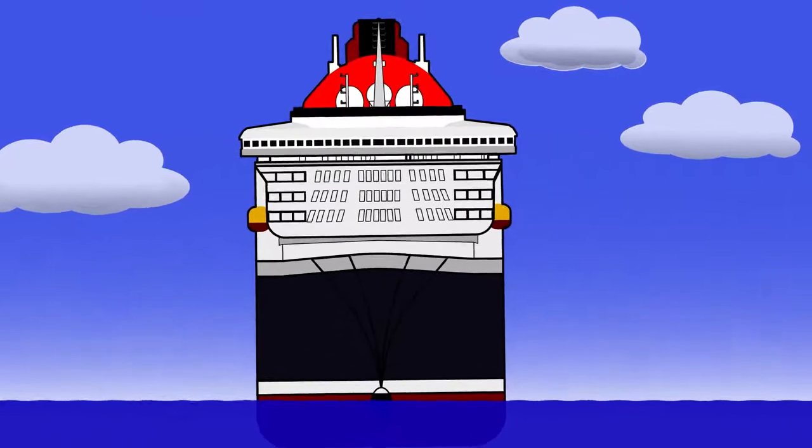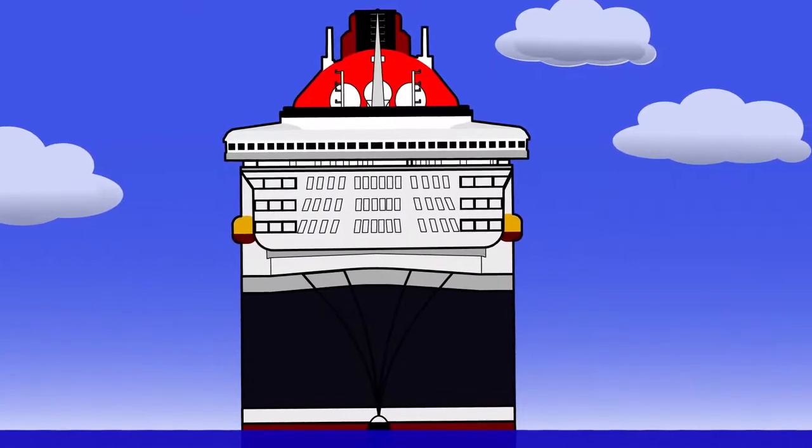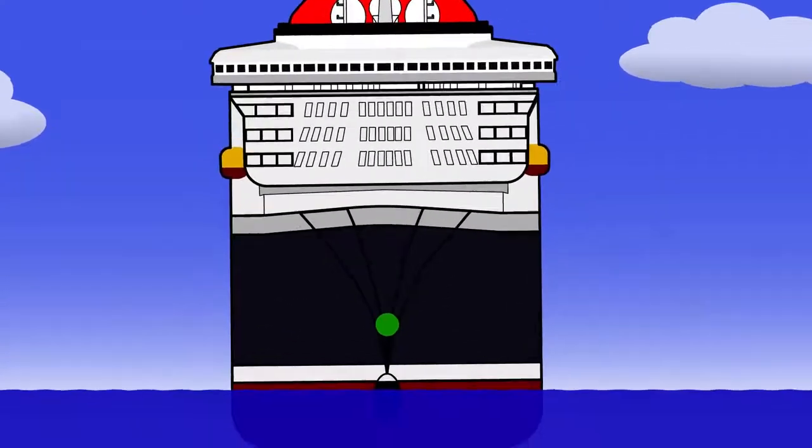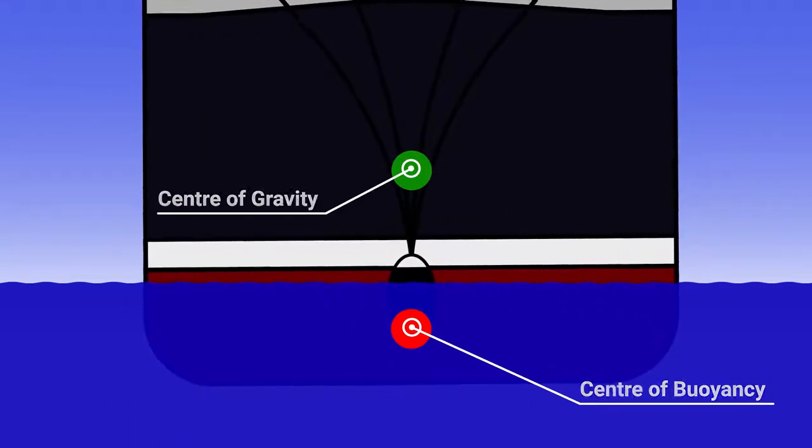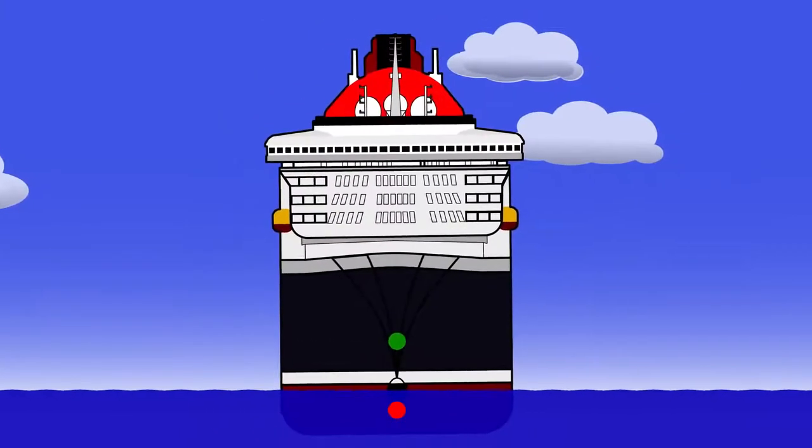Let's consider a standard cruise ship. In calm water, she's going to sit happily upright. Her stability is determined by her centre of gravity and her centre of buoyancy. As long as they're all lined up in the correct place, she's going to remain upright and stable.